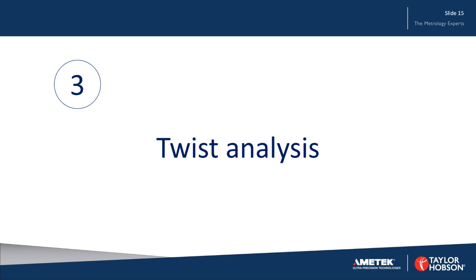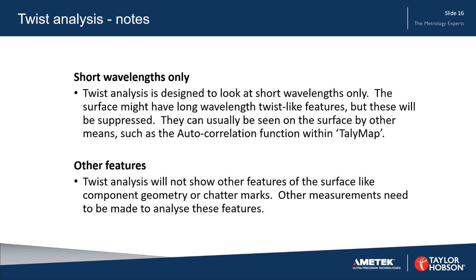So let's have a look at how we analyze the twist. Twist analysis is designed to look at short wavelengths only. Although the surface might have long wavelength twist-like features, these will be suppressed during the twist analysis. But if we want to see them, they can usually be seen on the surface by other means, such as autocorrelation within software such as TallyMap. The twist analysis will not show other features of the surface like component geometry or chatter marks.